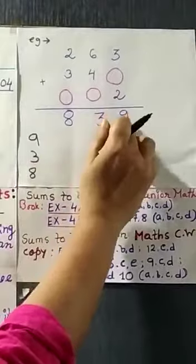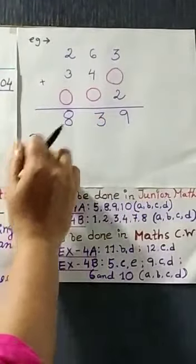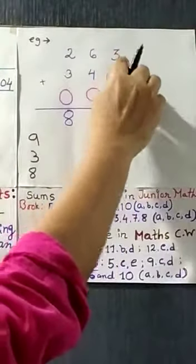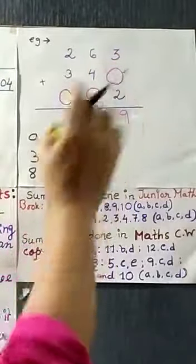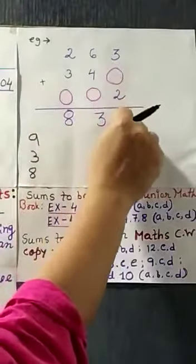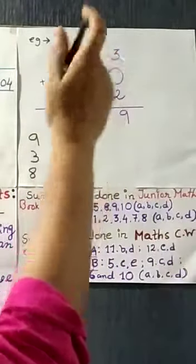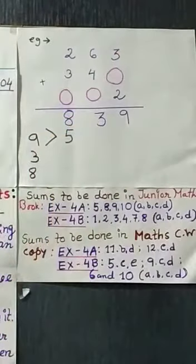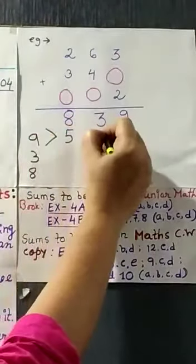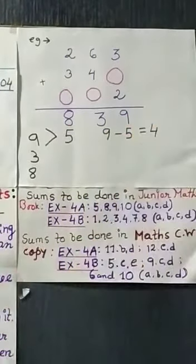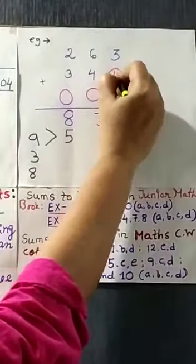First number here, it is given 9. So, I have written 9 over here. Here, in the first column, 3 and 2. So, what will be the sum of 3 and 2? Sum of 3 and 2 is 5. But, 9 is greater than 5. 9 is greater than 5. So, we will simply do the subtraction. 9 minus 5. 4. We will write 4 over here.